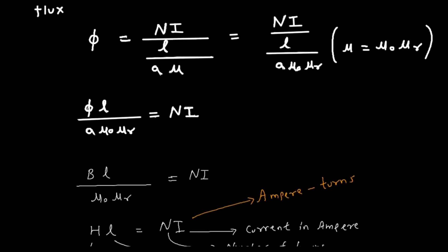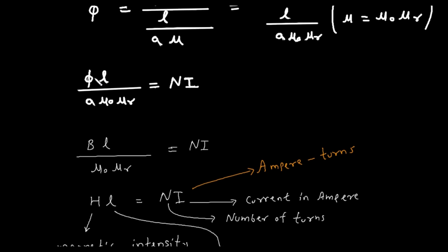Now here we know that phi by a equals flux density. Here we can write b is the flux density and it equals phi by a.